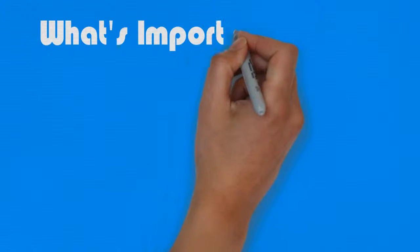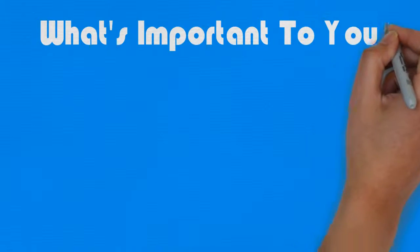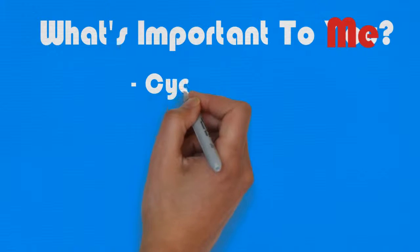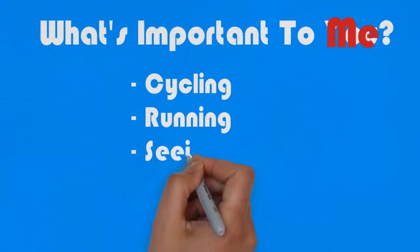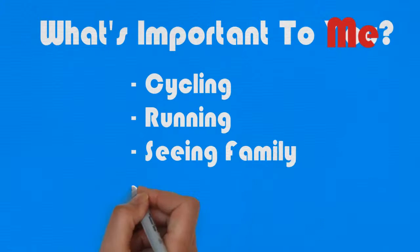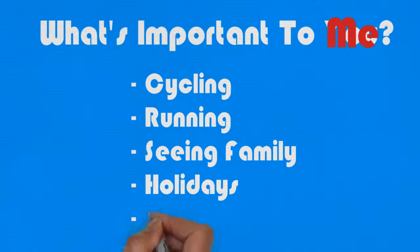Just think for a second of what's important to you. Possibly pause this video and write something down. Okay. Obviously, I can't go through your lists, but I'm going to give a few examples of mine and my family's. Hopefully some will tie in with what you've just thought of. Cycling, running, seeing family, going on holiday to Mallorca - that's from my mum. Socialising and talking to people - that's from my wife. So what happens to these things with ageing?